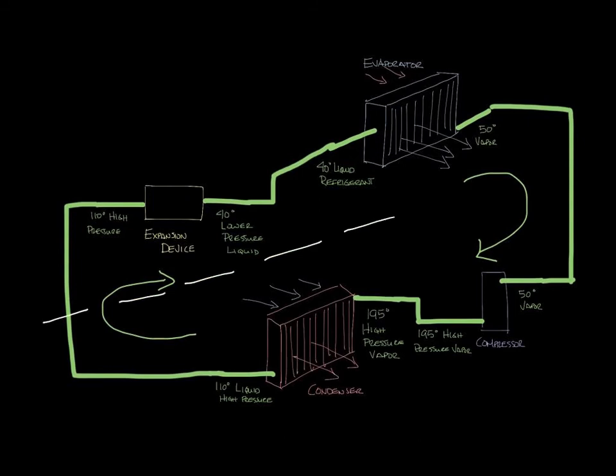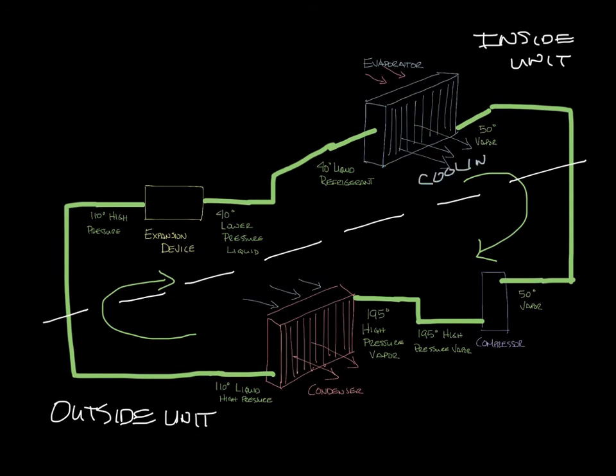So if I draw a line here, that kind of shows what is on the outside of the house and what's on the inside of your house. So now the air that's blowing through your evaporator is actually what's ducted into your house and provides you cooling. And the air that's going through the condenser is what's coming off your outdoor unit as hot air into the atmosphere.